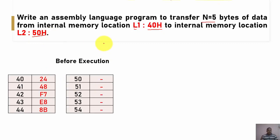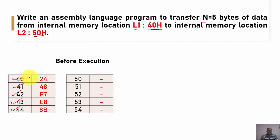We have some portion of internal memory with locations 40, 41, 42, 43, and 44, holding some 8-bit values at these successive memory locations. Whatever data is present from 40H onwards, we need to transfer it to memory location 50H onwards — that means from 50H to 54H.